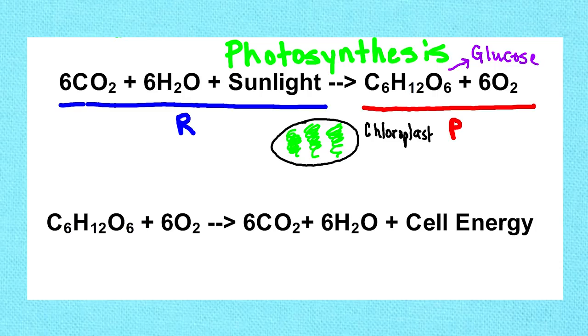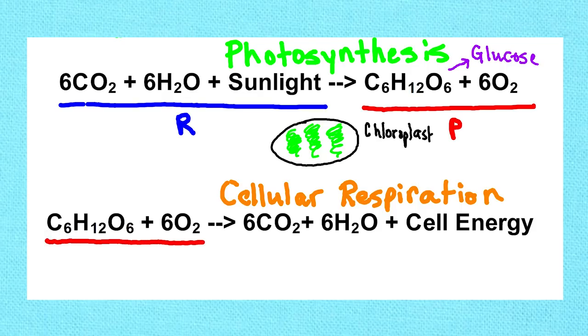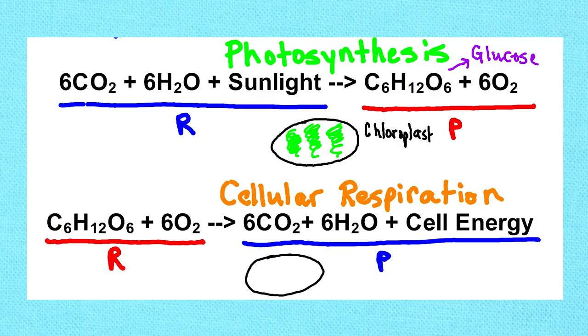We then have to go to the next process, which is cellular respiration. Now I'm going to take my C6H12O6 glucose and my oxygen. Now it's on the left, now it's my reactant. I'm going to process it and spit out some CO2, some water, and some cell energy. This is on the right, so it's my product. This all happens in this organelle, the mitochondria.